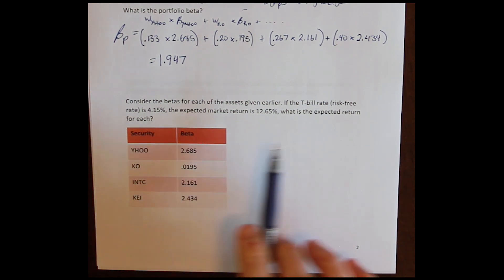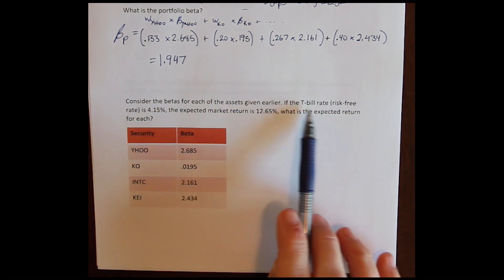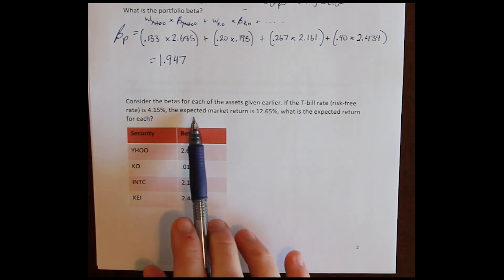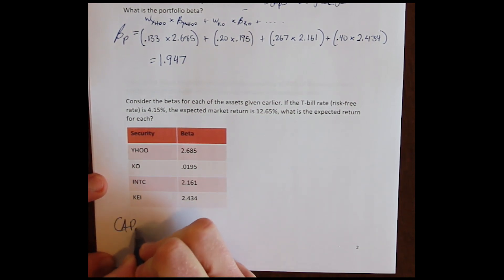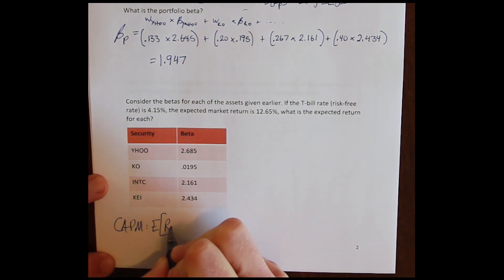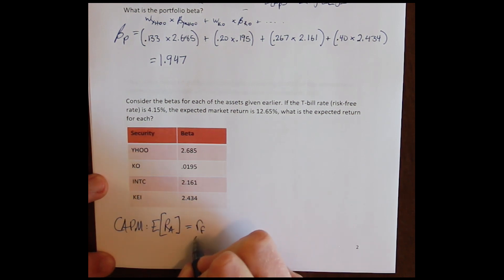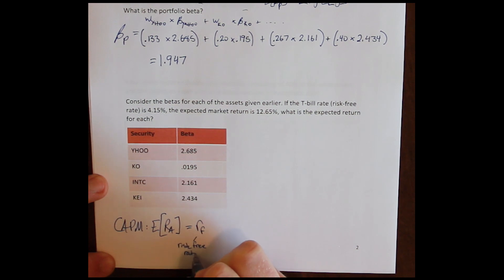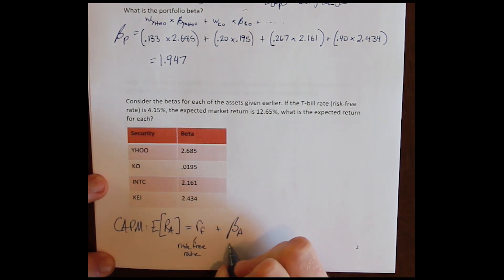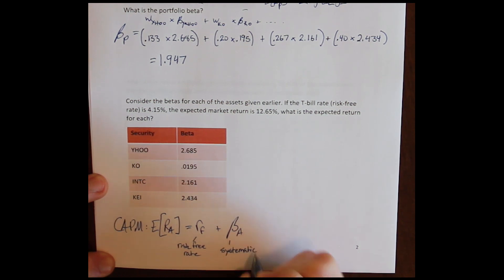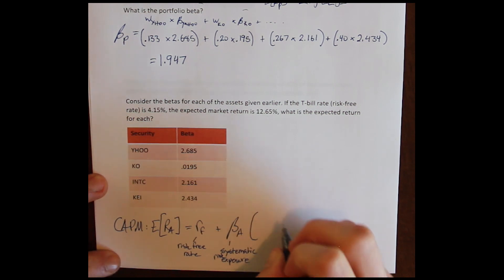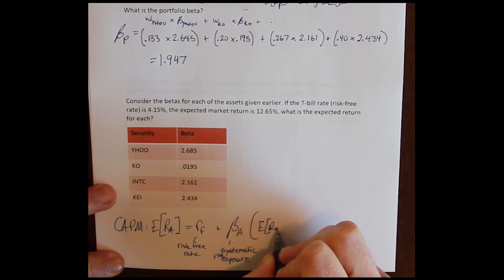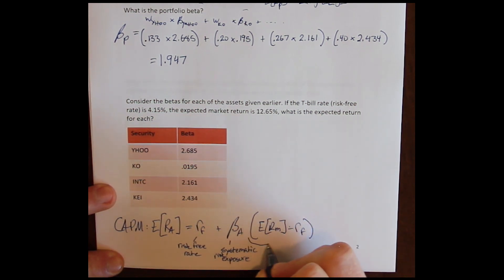We have the betas for our assets, Yahoo through Keithley. We have the risk-free rate — the T-bill rate is the typical risk-free rate, 4.15%. Expected market return: 12.65%. The expected return is based on the Capital Asset Pricing Model, which says that the expected return for any asset is equal to the risk-free rate RF, plus the beta on the asset — this measure of systematic risk exposure — times what we call the market risk premium, which is the expected return on the market minus the risk-free rate. This whole term in parentheses is called the market risk premium.